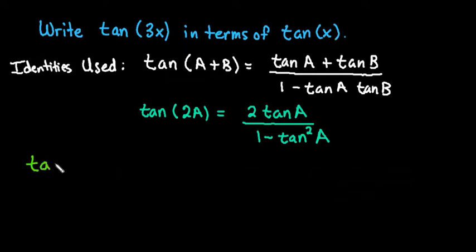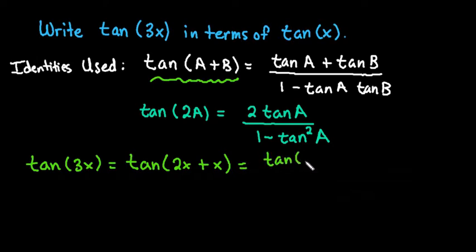So what we're going to start with is tangent of 3x can be rewritten as tangent of 2x plus x. So now we can use our sum rule first, where a just represents the 2x and b is just x. So we would rewrite this as tangent of 2x plus tangent of x. And it doesn't matter if you did x plus 2x, you're going to get the same answer in the end because both addition and multiplication are commutative.